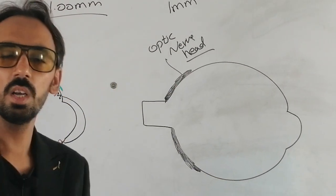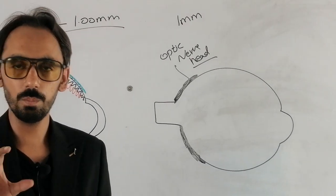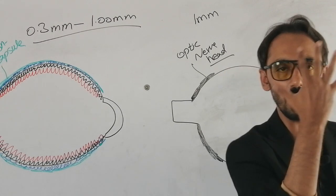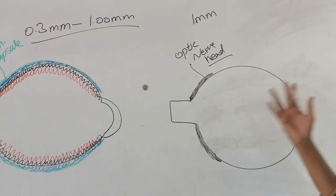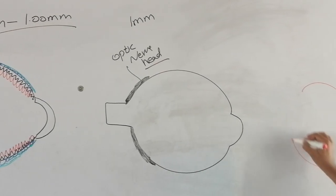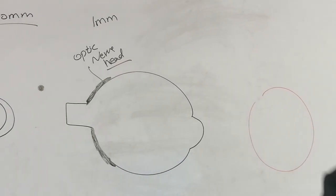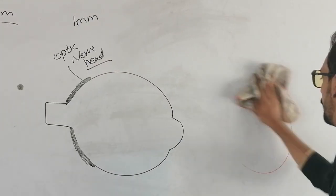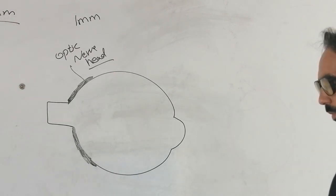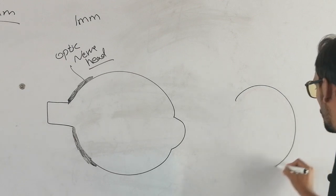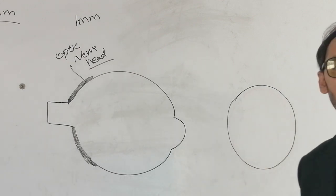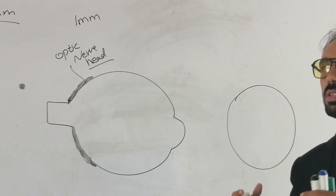Now we will discuss about the thinnest point of the sclera. The sclera is very thinnest. If I make the frontal view of the eyeball — this is the lateral view — now I am going to make the frontal view of the eyeball in a different color. This is the frontal view of the eyeball. You can see we have different recti muscles.